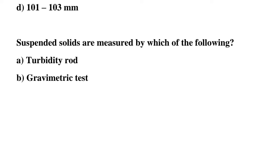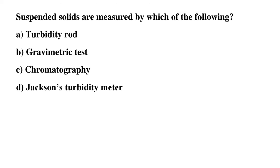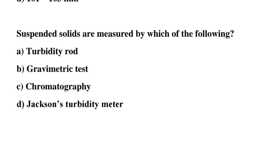Next question: suspended solids are measured by which of the following? Option A: turbidity, option B: gravimetric meter, option C: chromatography, option D: Jackson turbidity meter. The correct answer is option B: gravimetric meter.